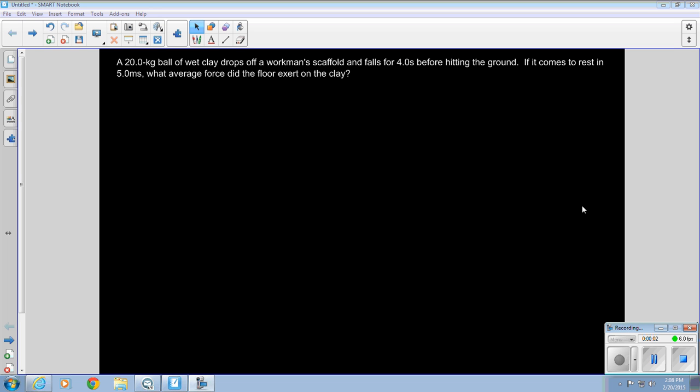All right, we're going to do a book problem, an impulse problem, where we have a ball of wet clay dropping off a workman's scaffold. It falls for four seconds before hitting the ground. If it comes to rest in 5.0 milliseconds, what average force did the floor exert on the clay? So this is a combination of kinematics and momentum.